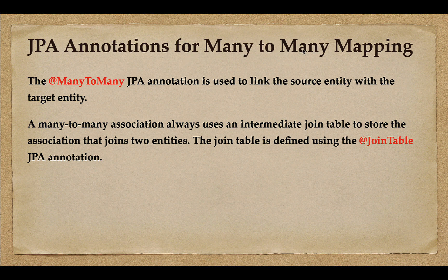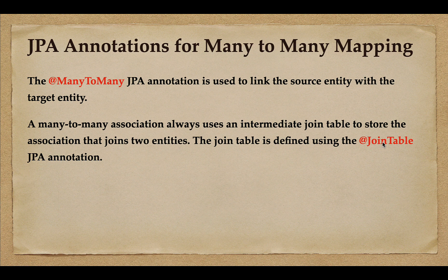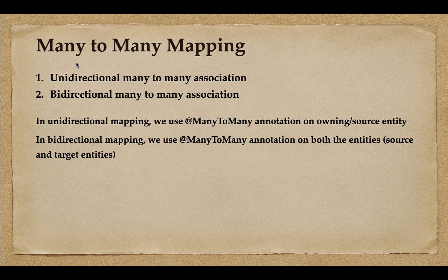Now let's look at the JPA annotations we can use to implement many-to-many mapping. We use the @ManyToMany JPA annotation to link the source entity with the target entity. A many-to-many association always uses an intermediate join table to store the mapping that joins two entities, and the join table is defined using the @JoinTable JPA annotation. We will use both @ManyToMany and @JoinTable to implement many-to-many mapping.